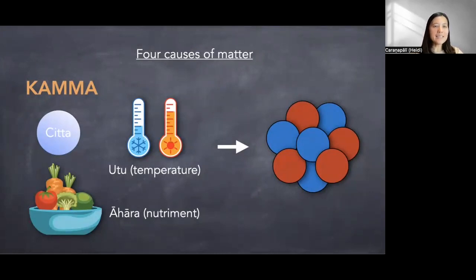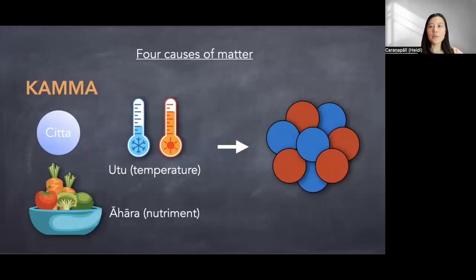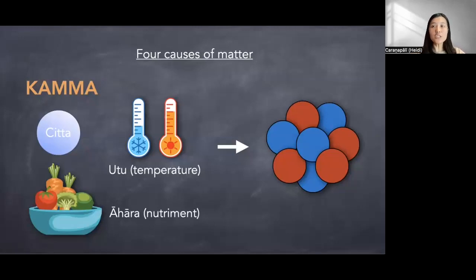When you look at ahara (nutriment), it's a little bit different from the other nutriment we just talked about. That one is called oja — the nutritive essence. Because of the English translation it can be misleading, but when we get there it will be clear. These four causes can directly produce some kinds of material properties. There are also some other material properties which are not concretely produced — they will also be shown in the next graphic, but they are conditioned by these causes rather than directly caused. Let's look at it in table format.